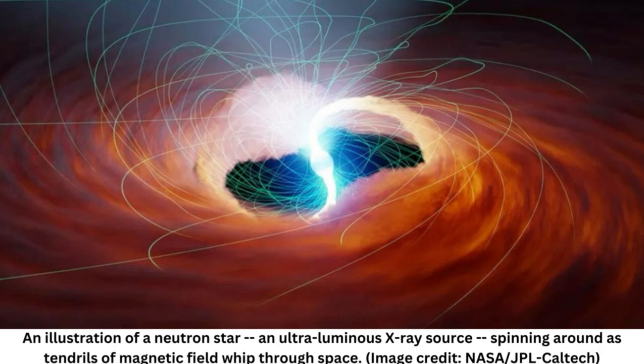The research team thinks this is evidence that something must be going on with M82X2 that lets it bend the rules and break the Eddington Limit. Their current idea is that the intense magnetic field of the neutron star changes the shape of its atoms, allowing the star to stick together even as it gets brighter and brighter.